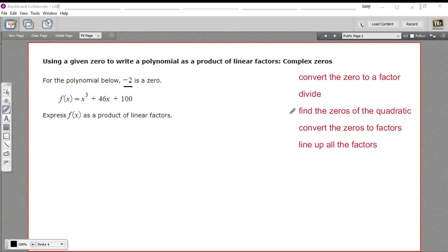Once we've got the quadratic, we can find the zeros of that either by factoring, or we can use the quadratic formula and then convert those zeros into factors if we had to use the quadratic formula, and then just line up all the factors. So those are the steps.